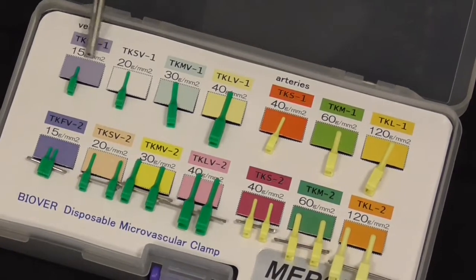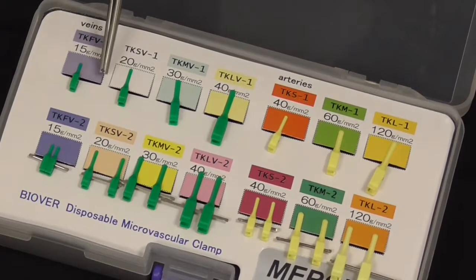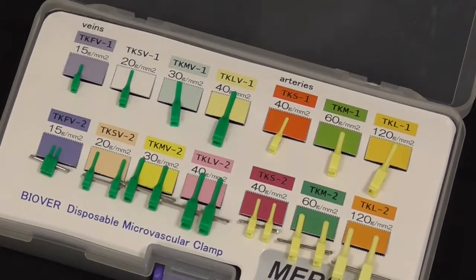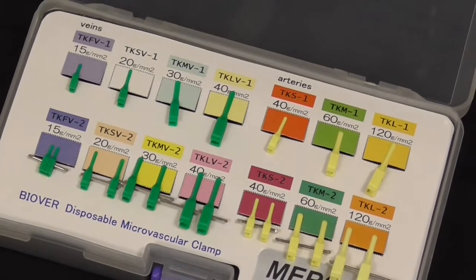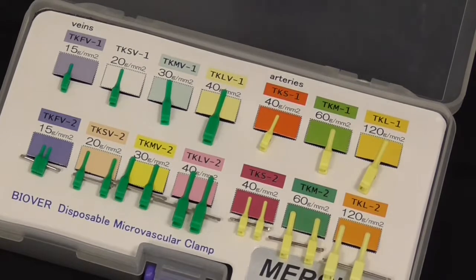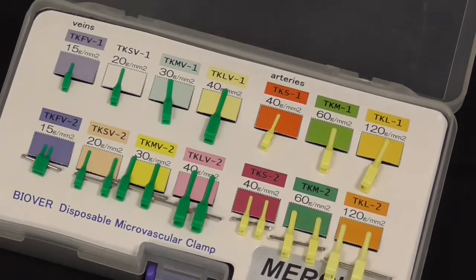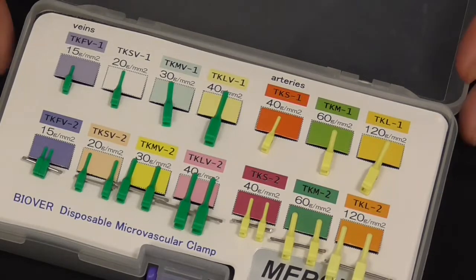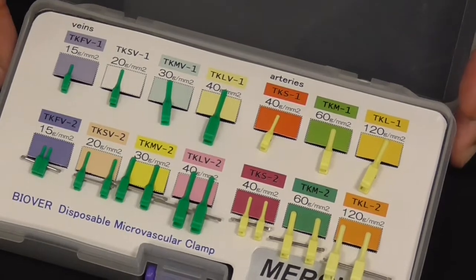If you had 15 grams per millimeter squared, the pressure given to a small vessel would be a lot more than for a larger vessel. That's why we use the smallest clamps we can per vessel. Veins are more prone to injury than arteries, so you want to use less closing pressure.